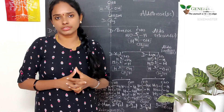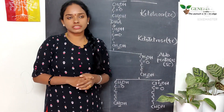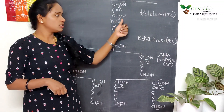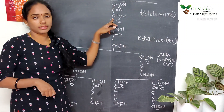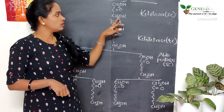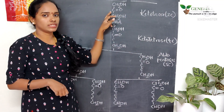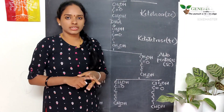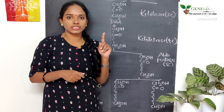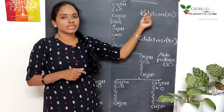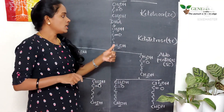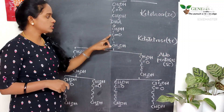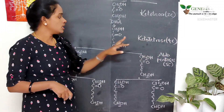Now let's write down the structures of ketoses. In ketoses, the starting compound with three carbon atoms is dihydroxyacetone. The first and last carbons contain primary alcohol groups, and the functional group is a ketone (C=O) at the second position. Dihydroxyacetone, which is a ketotriose, does not contain any chiral centers — unlike the aldotriose glyceraldehyde, which contains one asymmetric center. The next derivative is a four-carbon ketotetrose.